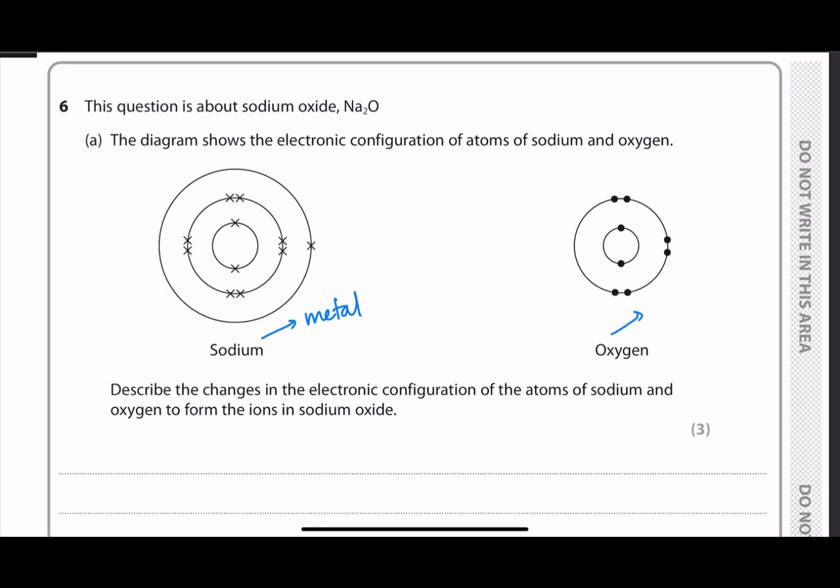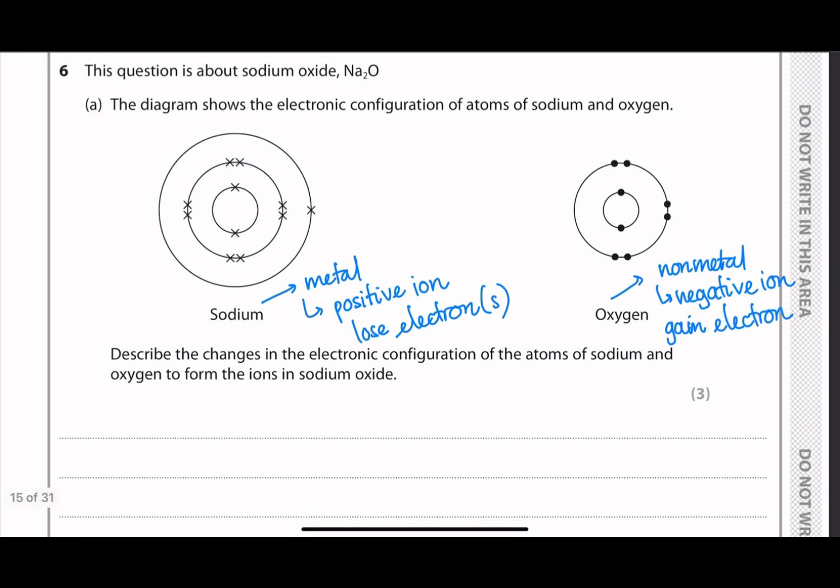The first observation is that sodium is a metal atom and oxygen is a non-metal atom. So metal atoms usually have the tendency to lose electrons and become positive ions, and non-metals have the tendency to gain electrons and become negative ions. And the bond between a metal and a non-metal is the ionic bond, and therefore sodium oxide is an ionic bonding compound.